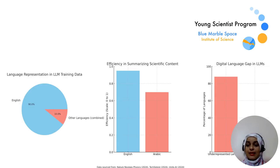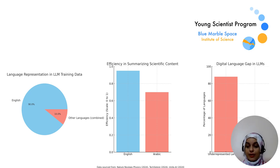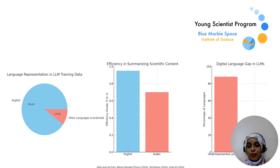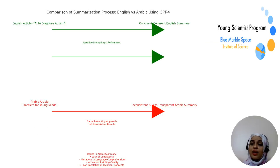Summarizing scientific content is challenging for LLMs, as models primarily trained on English data are more accurate in English but struggle with the Arabic language due to limited non-English training data. This restricts their ability to accurately condense complex information. For instance, Microsoft research indicates that 88% of the world's languages, spoken by 1.2 billion people, lack access to LLMs, mainly because they are English-centered.